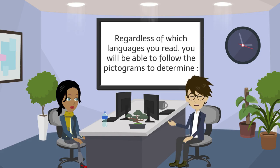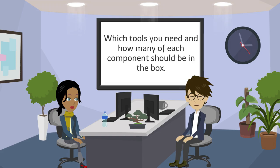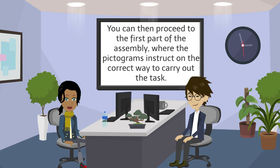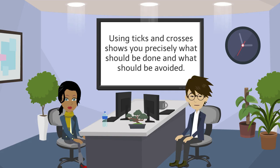Regardless of which language you read, you will be able to follow the pictograms to determine which tools you need and how many of each component should be in the box. You can then proceed to the first part of the assembly, where the pictograms instruct on the correct way to carry out the task. Using ticks and crosses shows you precisely what should be done and what should be avoided.